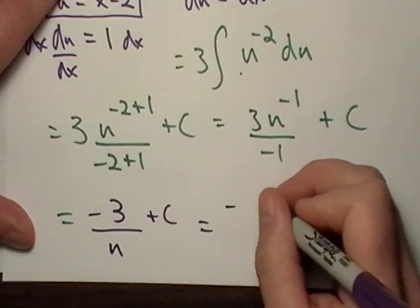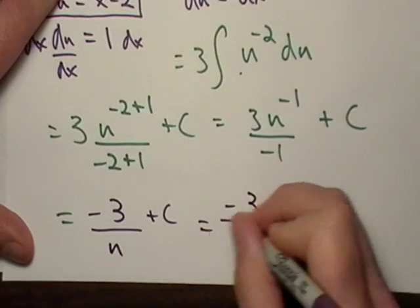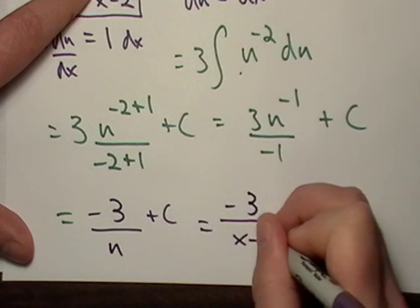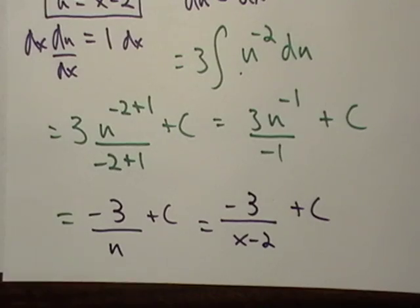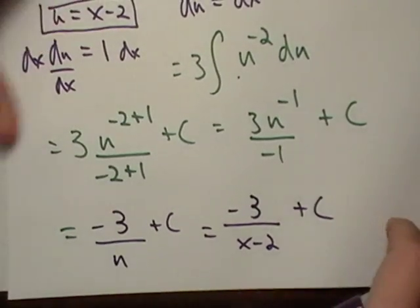Ok, negative three over x minus two plus c. Ok, we found our anti-derivative and we did it pretty easy.